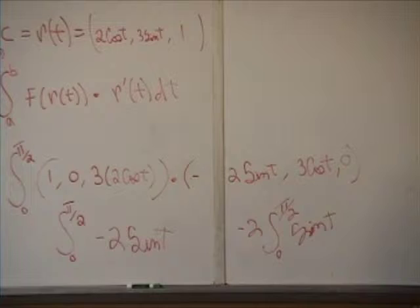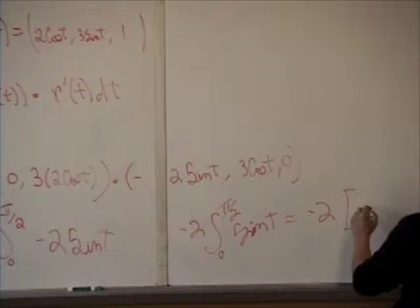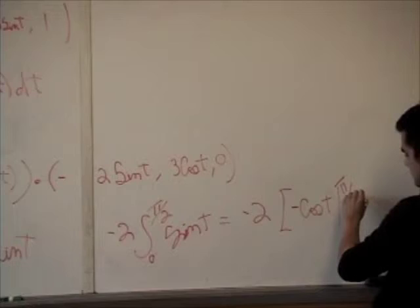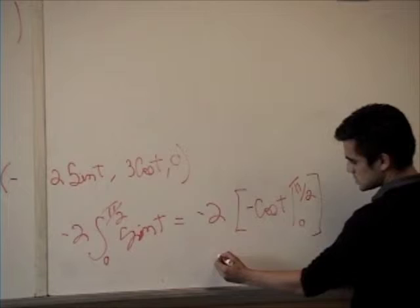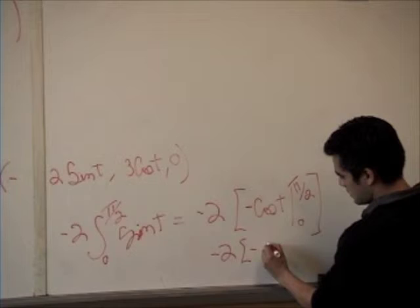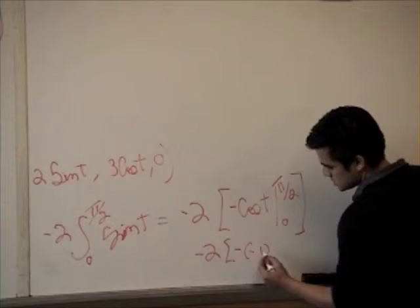And this is going to give you negative two times negative cosine of t from zero to pi over two. We know the cosine of pi over two is zero, and the cosine of zero is one, so it's going to be negative two times negative of negative one. This is going to give you negative two, which is going to be your answer.